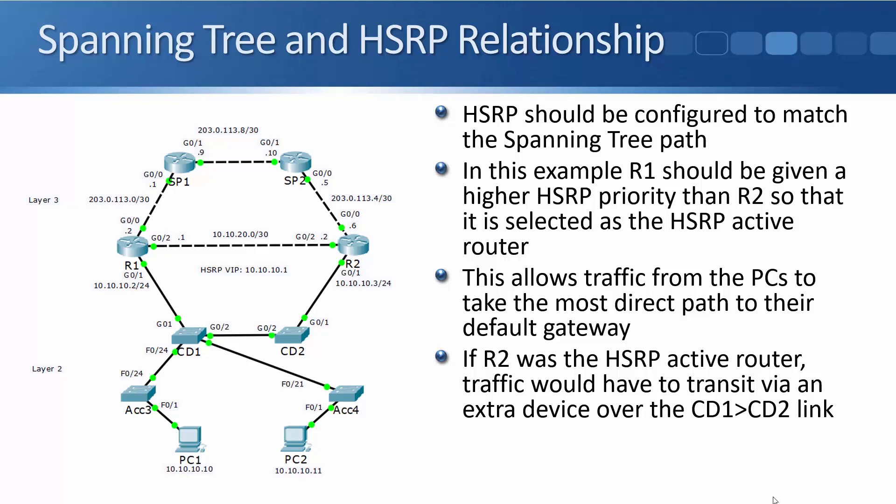Right now, CD1 is the root bridge and I'm going to configure R1 as the HSRP active gateway. So if traffic goes from PC1 up to the internet, it goes via Access 3, CD1, and then R1. And if traffic is coming from PC2, it goes from PC2 to Access 4, to CD1, and then R1. If R2 was my HSRP active gateway, traffic from PC1 would go to Access 3, then CD1, then CD2, and then R2 — taking an extra hop over my core distribution switches. So you want to line up your HSRP and spanning tree configuration so that traffic goes over the most direct path at layer two and at layer three.